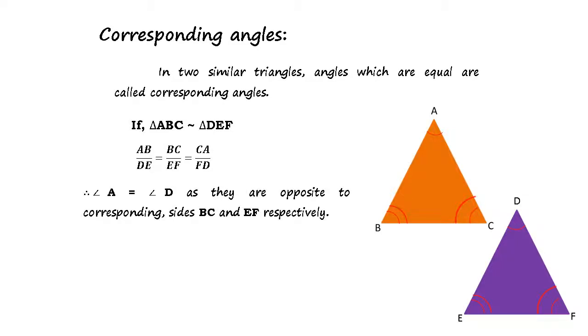Therefore, angle A is equal to angle D as they are opposite to corresponding sides BC and EF respectively. Similarly, angle B is equal to angle E and angle C is equal to angle F.